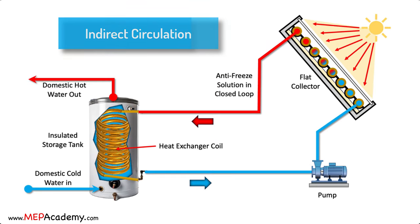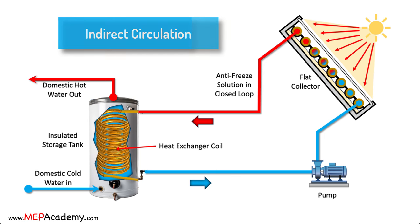Indirect circulation systems, also known as closed-loop systems, use an intermediate heat transfer fluid to transfer thermal energy from the solar collectors to the water in the storage tank. This allows them to operate in colder climates without the risk of freezing.